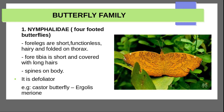For butterfly families, the first family is Nymphalidae. In Nymphalidae, butterflies have four legs — the forelegs are short and functionless, folded on the thorax. The fore tibia is short and covered with long hair spines. They are defoliators — meaning they damage leaves or foliage. Example: castor butterfly.